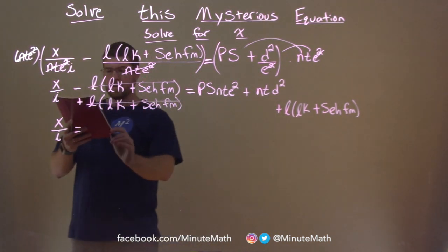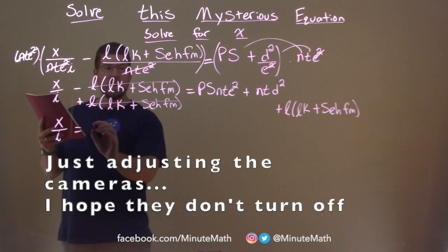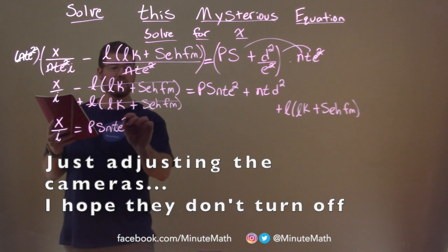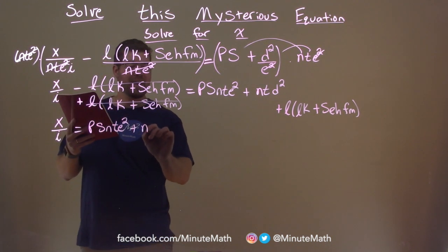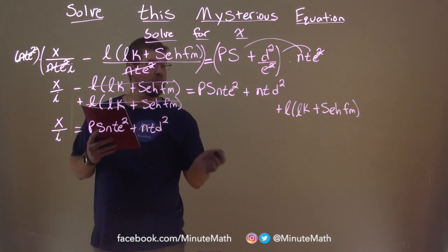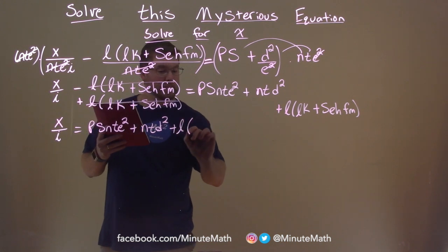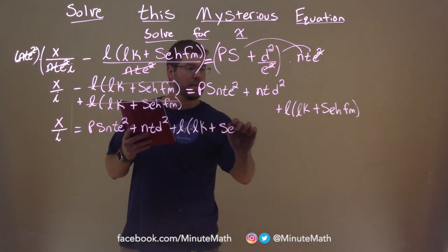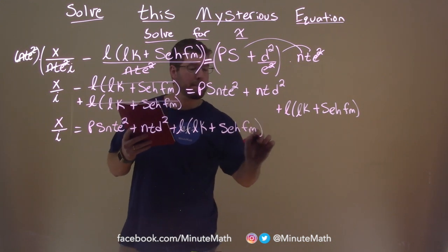And we have this. We have p, s, n, t, e squared plus n, t, d squared plus l times lk plus sehfm.